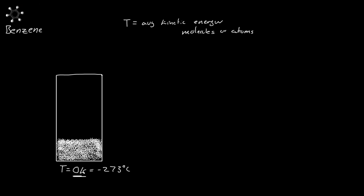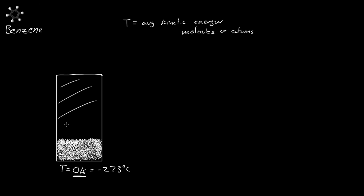Let's say for some reason we had a molecule of benzene up here. If it's at zero degrees Kelvin, then it's not moving, and if it's not moving, it's just going to fall towards the Earth. When it gets in here, this little molecule of benzene is actually going to start interacting with the other molecules of benzene — most likely van der Waals forces. So it will just fall down into there. If there are no benzene atoms up here, that means there's no pressure.